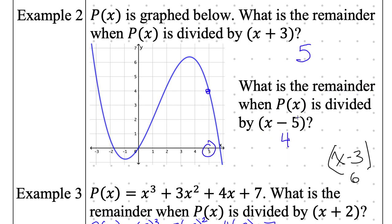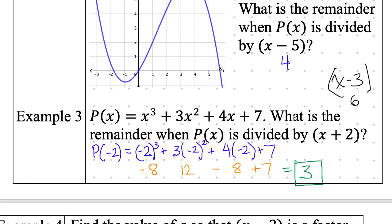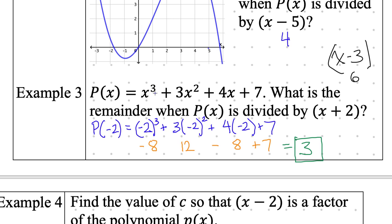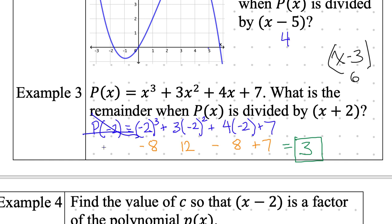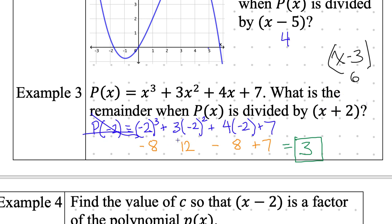Same thing for x minus 5 — switch it to a positive 5, plug in positive 5. What is the y coordinate? The y coordinate will be the same thing as the remainder. The y coordinate is 4, so the remainder is 4. What x coordinate do I plug in to get the y coordinate out? If I get the y coordinate, the y coordinate is the same thing as the remainder. Take the opposite of positive 2, plug in negative 2, and do the math. That's it.